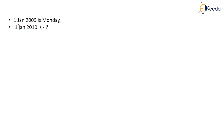Here is the first question: 1 January 2009 is Monday. What is 1 January 2010? If you do it the normal way, you get 365 days. Divide by 7 — after 364, one is the remainder. So you add one day, which means it is Tuesday. This is simple when the gap is just one year.